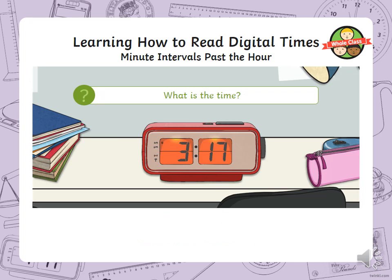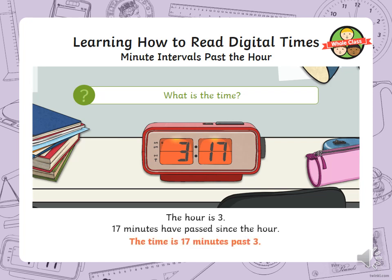Have a look at this and write down on your piece of paper how many hours there are, how many minutes past the hour, and then write down the time in how we would verbally say it. The hour is 3, 17 minutes have passed since the hour, and the time is 17 minutes past 3.